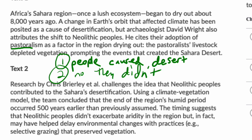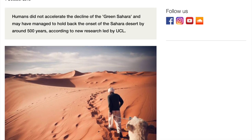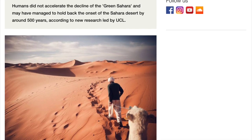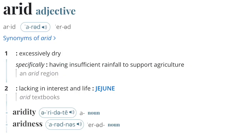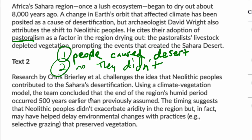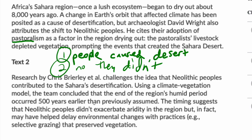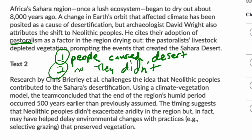Using a climate-vegetation model — one that incorporates both climate and vegetation factors — the team concluded that the end of the region's humid period occurred 500 years earlier than previously assumed. The timing suggests that neolithic peoples didn't exacerbate or worsen aridity. Deserts are described as arid — very dry. This desertification can't be pinned on the neolithic people because the changes had already started before they arrived.